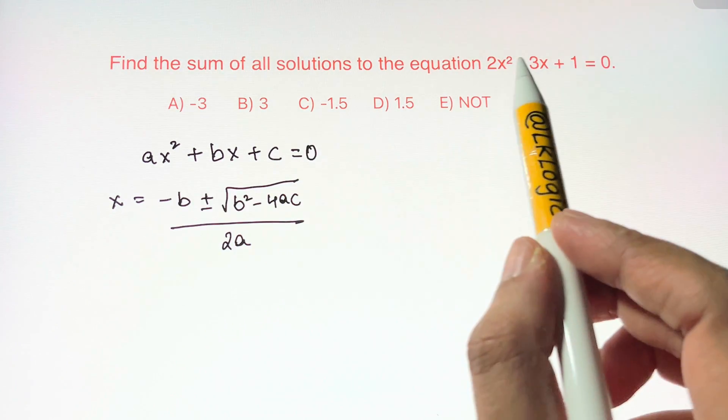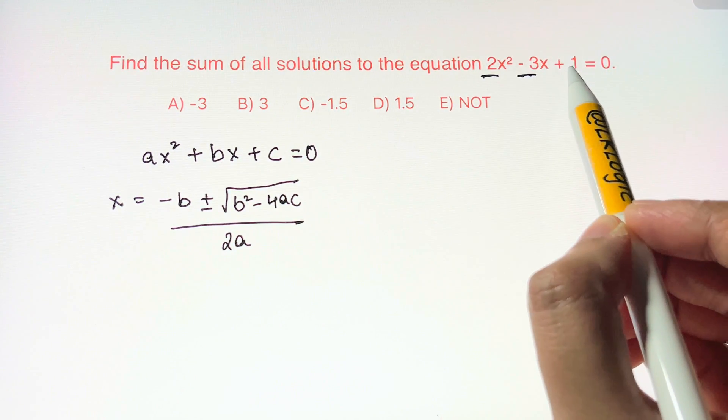For the equation in the problem, a is 2, b is -3, c is 1.